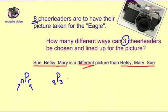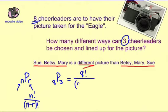So 8P3. The formula says we do N factorial over (N minus R) factorial. Plugging in, it's going to be 8 factorial over (8 minus 3) factorial. Simplifying this: 8 factorial over 5 factorial.